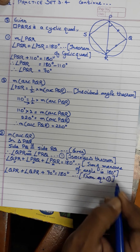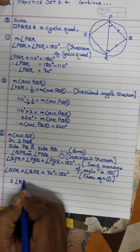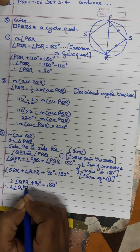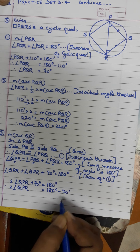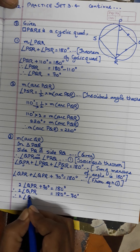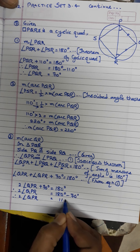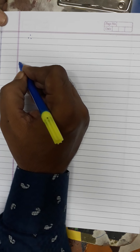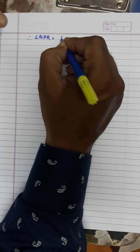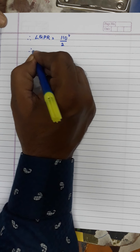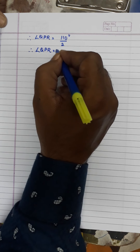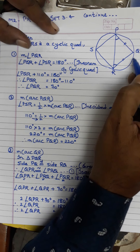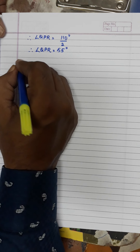So 2 times angle QPR plus 70 degrees equals 180 degrees. Therefore 2 times angle QPR equals 180 minus 70, which is 110 degrees. So angle QPR equals 110 divided by 2, which equals 55 degrees.